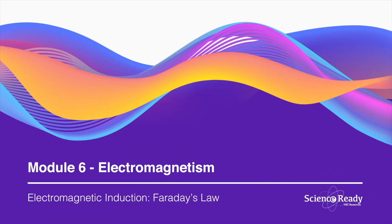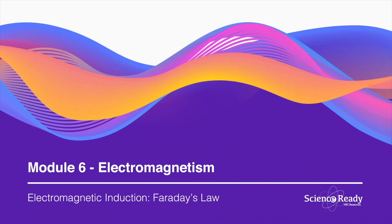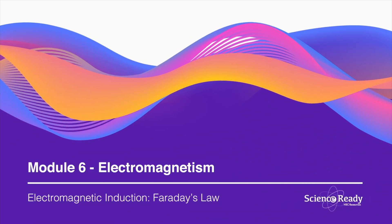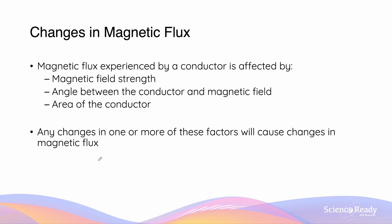Hello everybody. This video is on electromagnetic induction, Faraday's law. Previously in the video on magnetic flux, we talked about that the magnitude of magnetic flux is affected by three variables, and this is given by the equation Φ equals BA cosine theta.